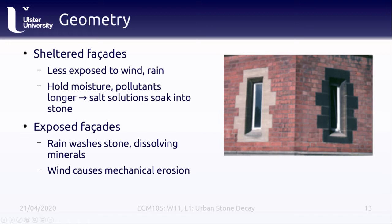On the other hand, if a facade is exposed to the elements — facing the sun or open to rainfall — then the rain washes the stone and doesn't allow pollutants to sit there. But that repeated washing by rain causes dissolution weathering. Similarly, if it's exposed to the wind, it can cause mechanical erosion.